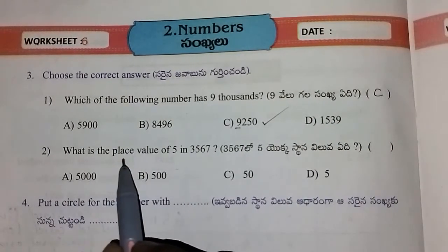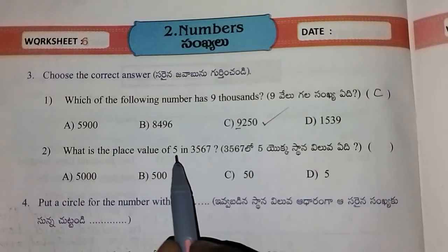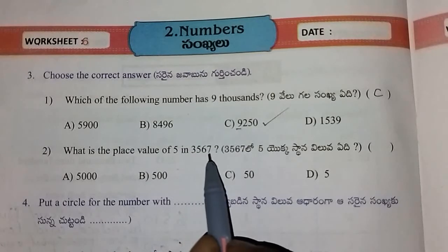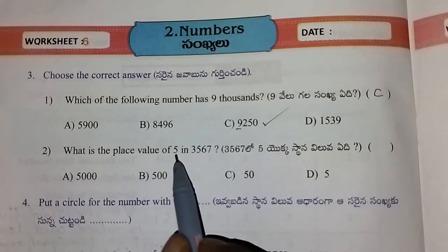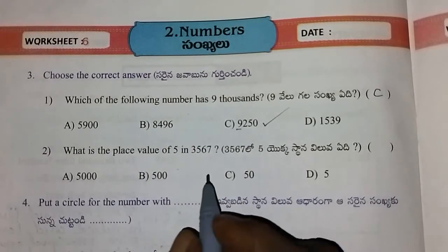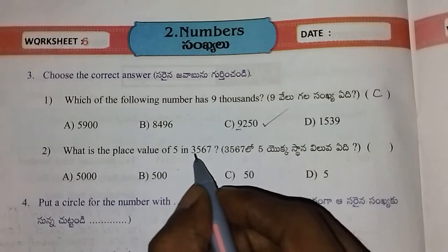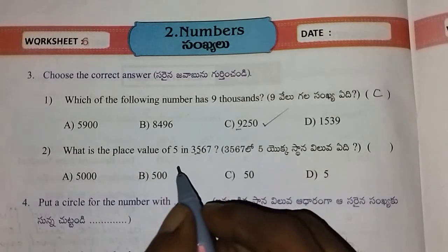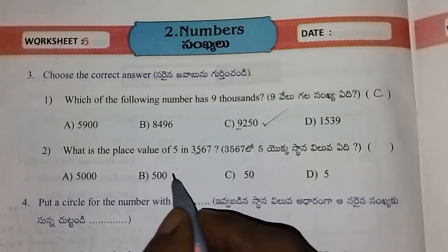Next, what is the place value of 5 in 3,567? In this number, 5 is in the hundreds place. The place value of 5 is 500.